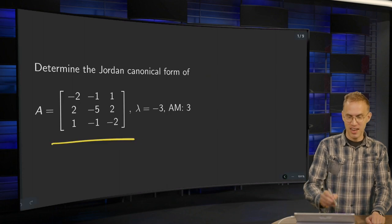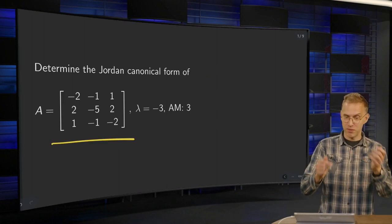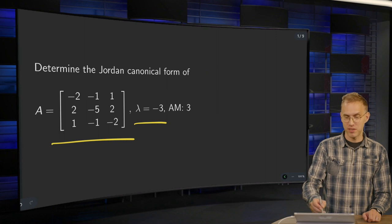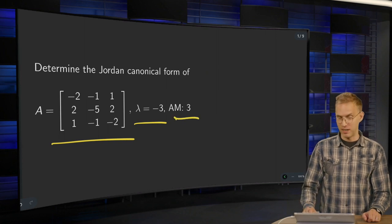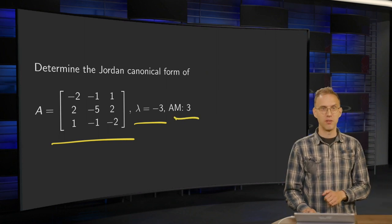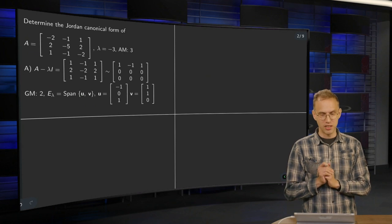So here we have our matrix A. I already gave you that lambda equals minus 3 with algebraic multiplicity 3. I know how to do this using the characteristic polynomial.